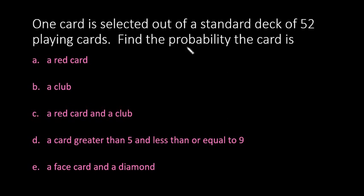Hi! For this video, we're going to calculate the probability of these events occurring. What's happening is we have one card selected out of a standard deck of 52 playing cards, and we're going to find the probability that the card is either a red card, a club, a red card and a club, a card greater than 5 and less than or equal to 9, a face card and a diamond. So we're going to look at each of these individually.